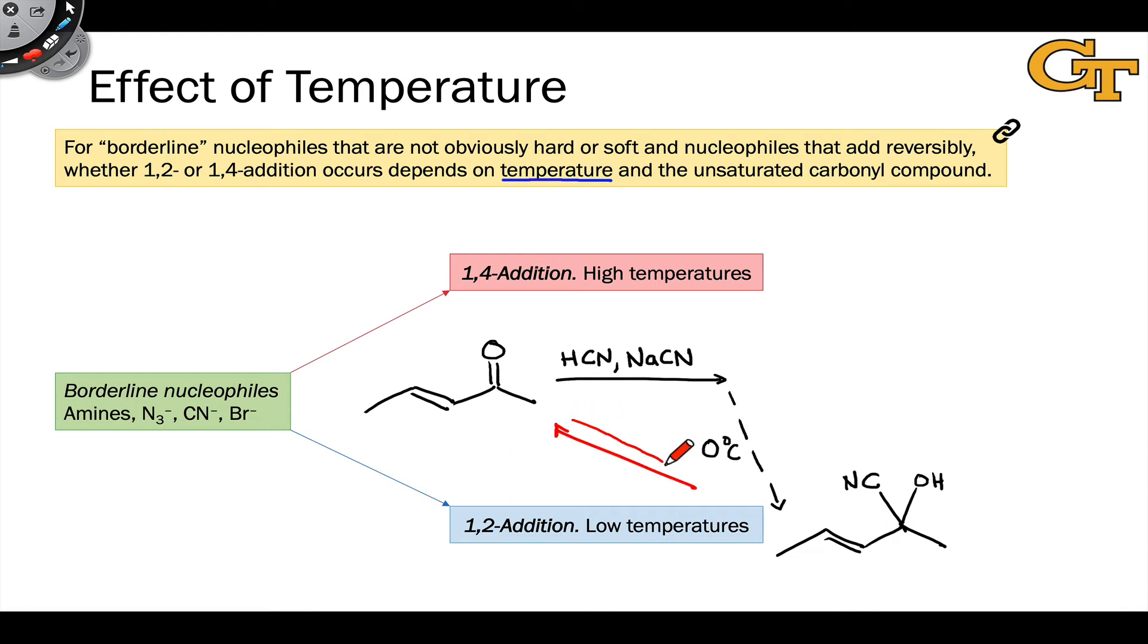However, if the temperature is raised or the reaction is allowed to run for a long period of time, the 1,2 addition product is gradually replaced with the 1,4 addition product, and it becomes the major product at high temperatures and long reaction times. The reason for this is that the 1,2 addition product can revert back to starting material. Cyanide adds reversibly. We've actually seen this previously. And so the cyanohydrin can reform starting material, and at high temperatures, 1,4 addition will begin to predominate.